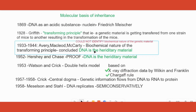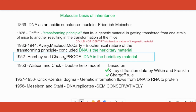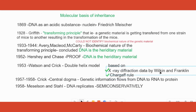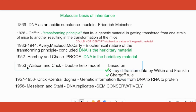Avery, MacLeod, and McCarty concluded using an experiment, but there was no exact proof. They said that by eliminating RNA and protein, DNA could be the genetic material. Next, Hershey and Chase gave the proof that DNA is the hereditary material. After that, in 1953, Watson and Crick proposed a double helix model of DNA, based on X-ray diffraction data from Wilkins and Franklin, and on Chargaff's rules.